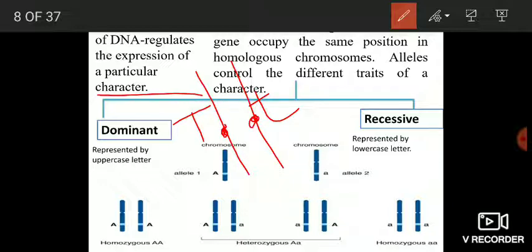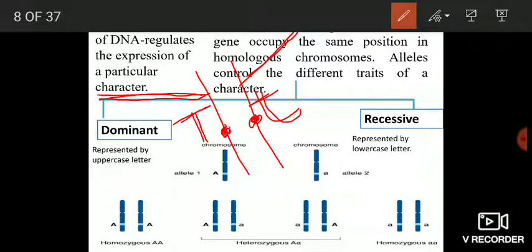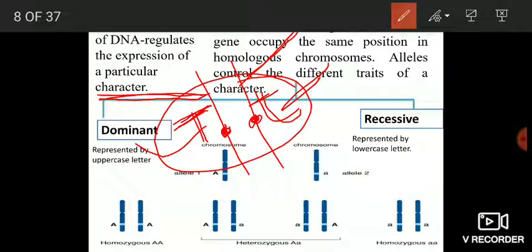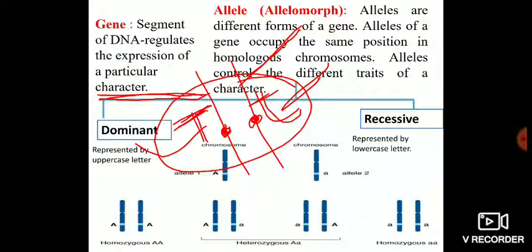Homologous chromosomes are those chromosomes which are present in the same cell and are identical — one came from the father, another came from the mother. These two genes occupy the same position, the same locus, on these two homologous chromosomes. One is represented by capital T and another by small t. This capital T gene leads to tallness, and this small t gene leads to dwarfness. Thus, these are the contrasting forms of the same gene — the different forms of the same gene are known as alleles.